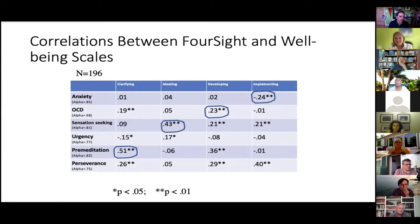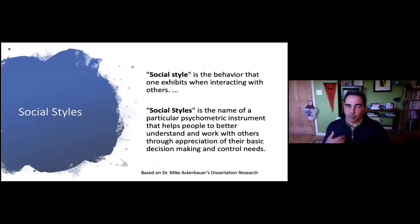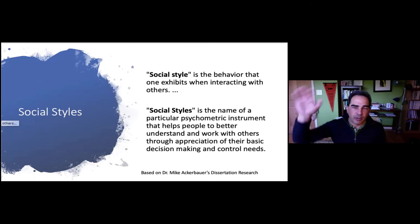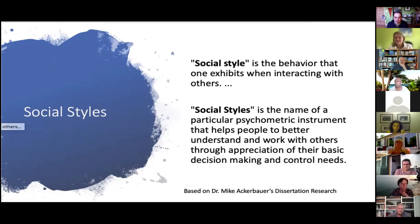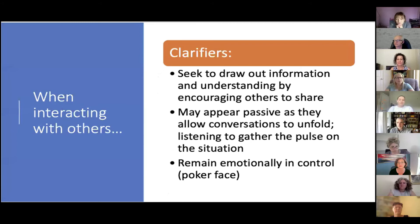Let me tell you about Mike Ackerbauer's research on social styles. Social styles relates to the behavior one exhibits when interacting with others — taking foresight beyond just an individual perspective to how we work, collaborate, and communicate with others. Does foresight give us insights into differences in how we show up when working with others? Mike, I'm giving a very high-level overview and would encourage folks to reach out to you directly.